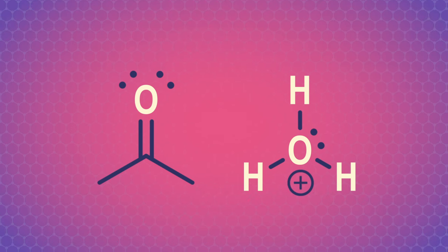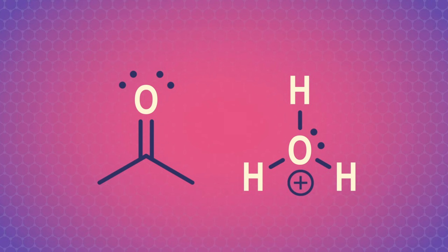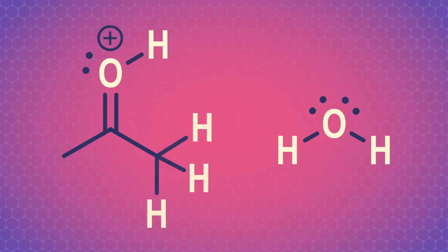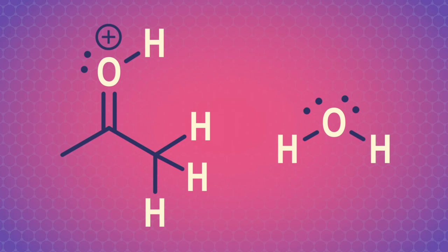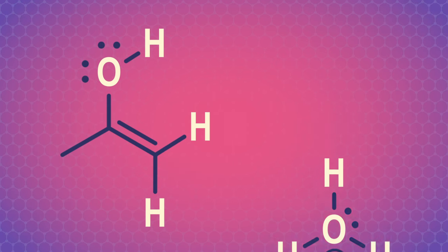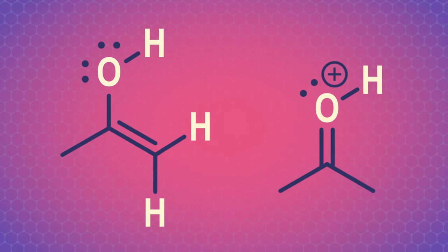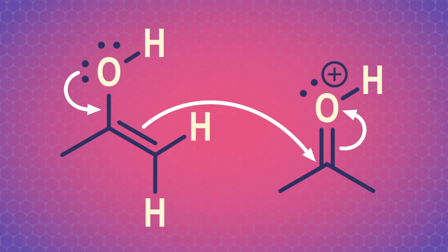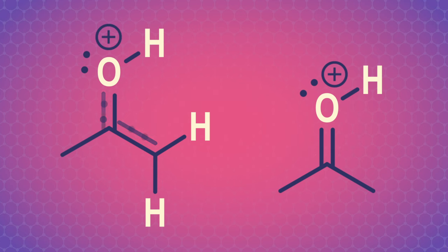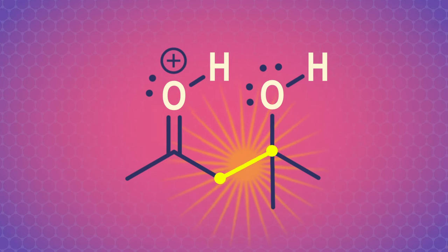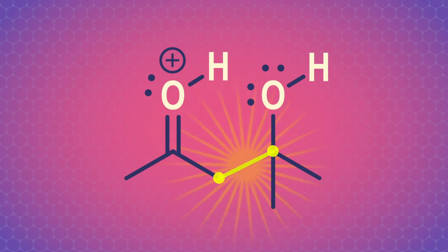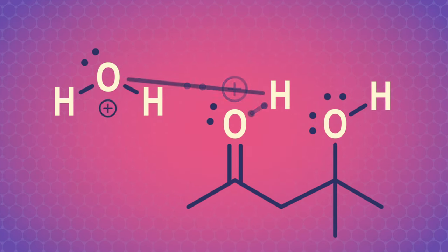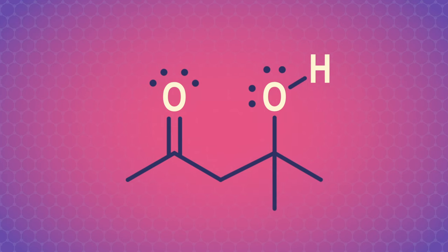Time for the acid-catalyzed version. As we saw in the last episode, the carbonyl oxygen is protonated. Then the alpha-carbon is deprotonated by the conjugate base of our acid, and we get an enol. Now, another protonated ketone enters the mix, with its electropositive carbon vulnerable to nucleophilic attack. The electrons push down from the oxygen, kicking out the double bond of our nucleophilic enol, which makes a carbon-carbon bond with our protonated ketone. That's our aldol addition step. Then the protonated carbonyl group is deprotonated, and voila — we have a neutral aldol product.